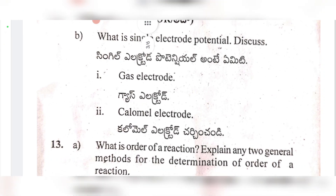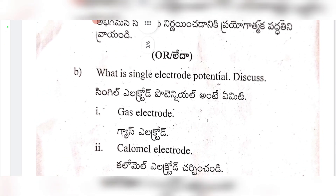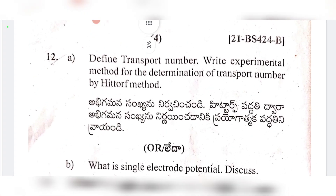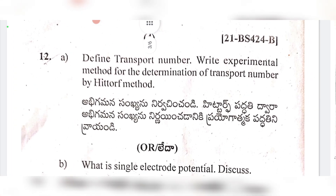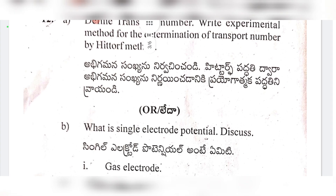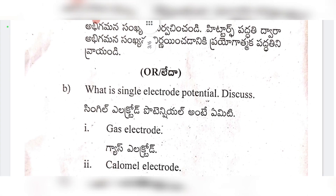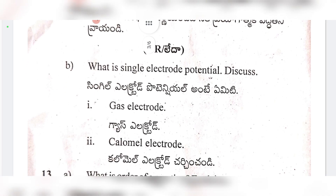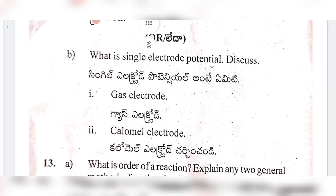Question 12a: define transport number. Write the experimental method for the determination of transport number by the Hittorf method. Question 12b: what is single electrode potential? Explain the gas electrode and the calomel electrode.